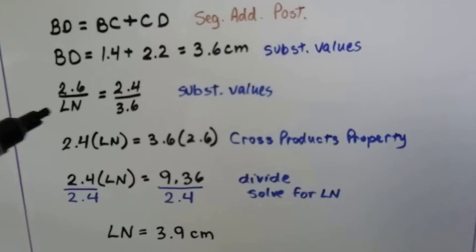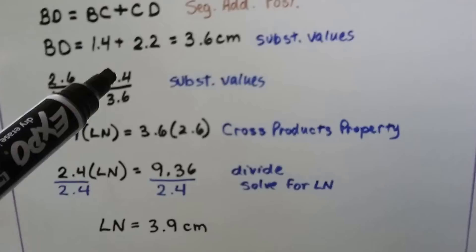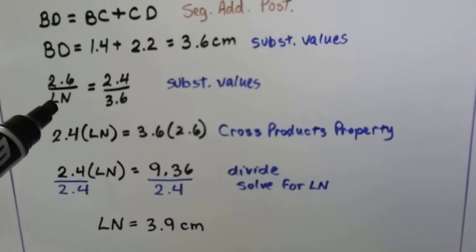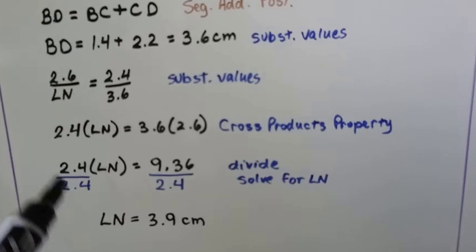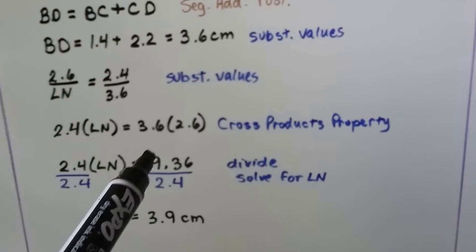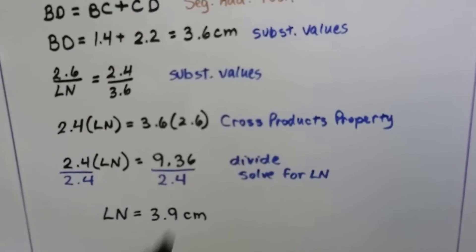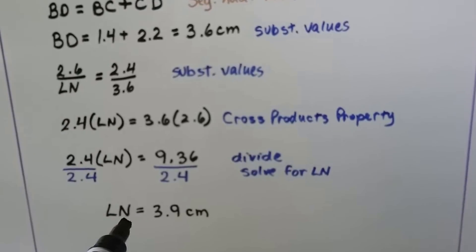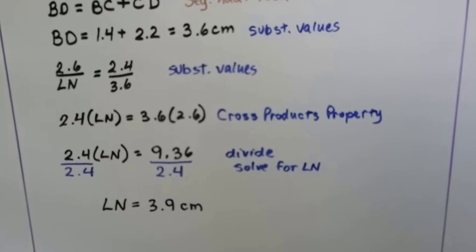So now we've got our values substituted in. We can use cross-products property. We can do 2.4 times LN, and 3.6 times 2.6. 3.6 times 2.6 is 9.36. We can divide both sides by the 2.4, and we find that the segment LN is equal to 3.9 centimeters for her drawing.